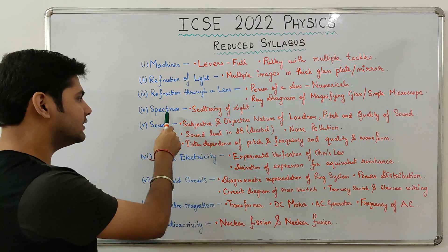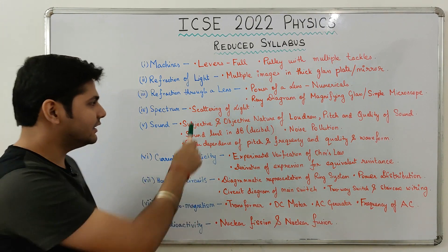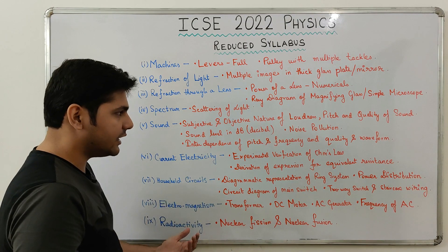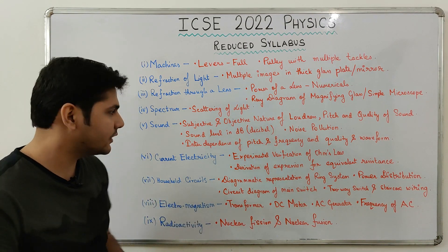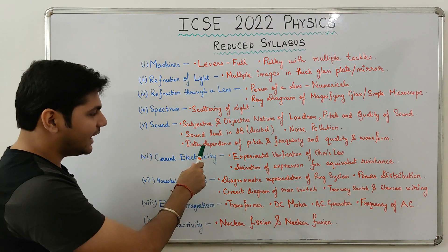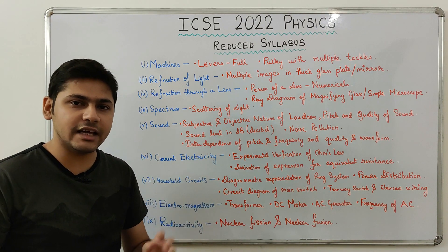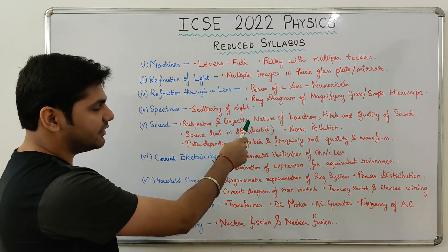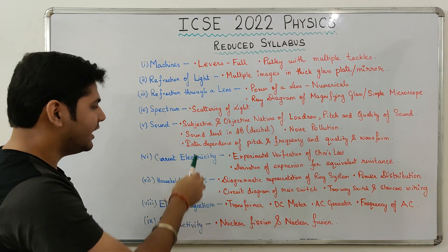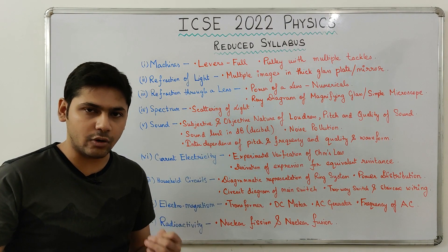From the Spectrum chapter, questions like 'Why is the sky blue?' used to be asked — now you don't have to study scattering of light. Next, from Sound, four topics have been removed: first, the subjective and objective nature of loudness, pitch, and quality of sound; second, sound level in decibels; third, noise pollution; and fourth, the interdependence of pitch and frequency, and quality and waveform.